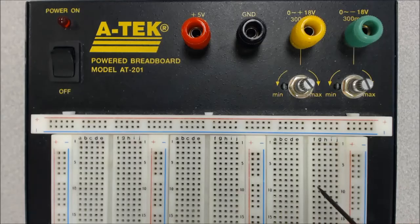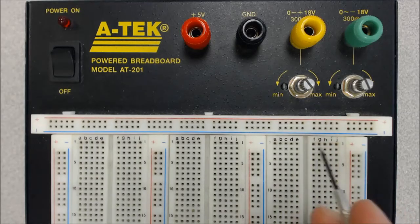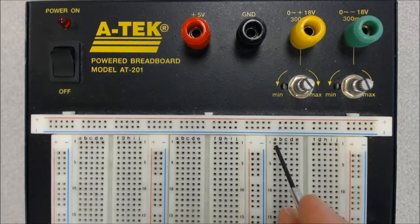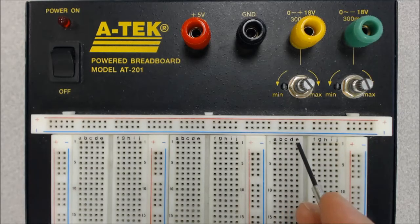The other set of holes that we have is here in the middle of the breadboard. And this is usually where we'll build our circuits and put our different circuit components. So here all the holes in a row are connected together.